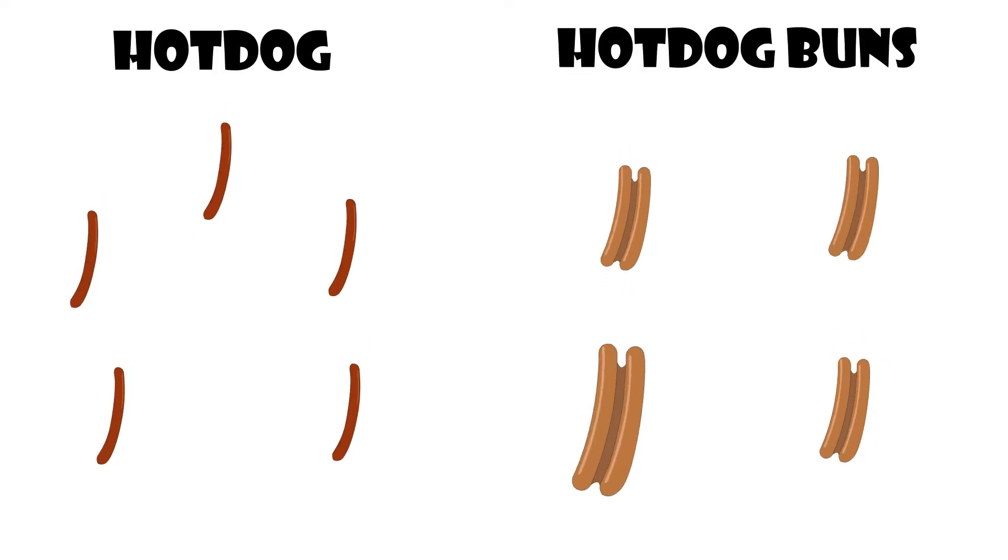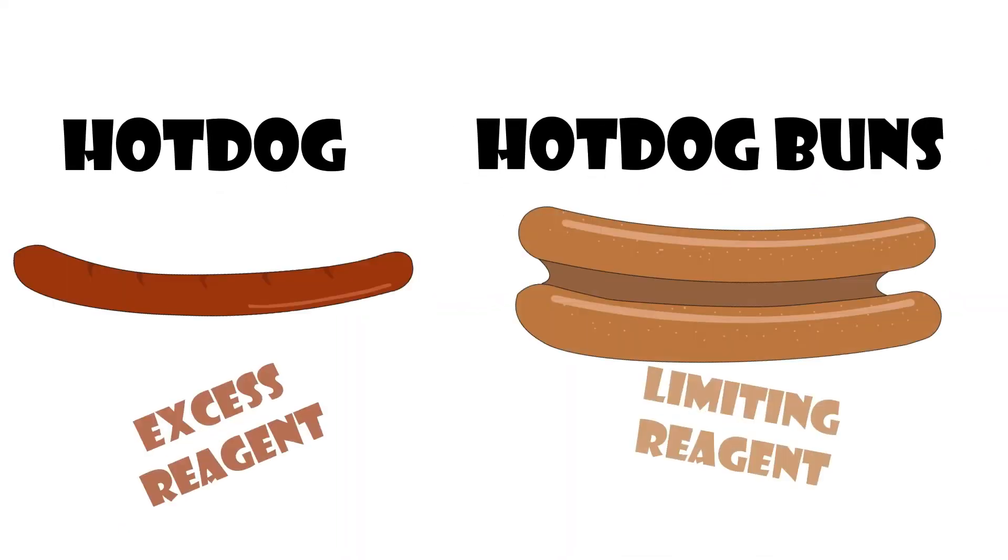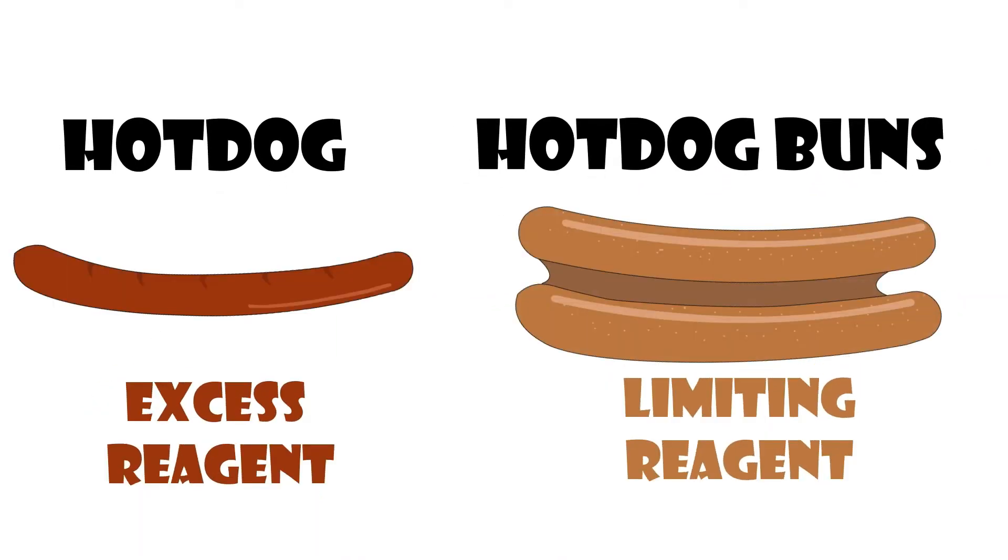It is like having five hot dogs and four buns. Due to the one is to one ratio, we can only have four complete hot dogs in a bun. For this example, the bun is the limiting reagent whereas the hot dogs are the excess ones.